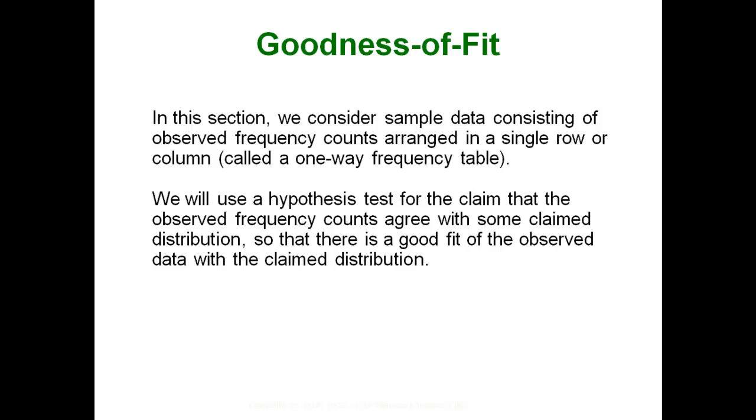Before we had to have dichotomous data. Either things had the characteristic or they didn't, and therefore you got a p-hat or proportion of your sample that had that characteristic. Now we can have an entire spread of probabilities. The idea is instead of just having two categories, a yes and no kind of thing, you can have multiple categories and then you can have the proportion that each category should have, and you're going to test whether or not your sample fits, has a goodness of fit to that proposed distribution.